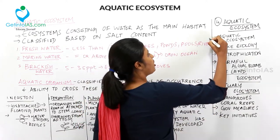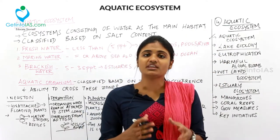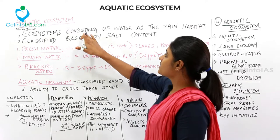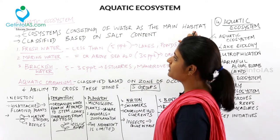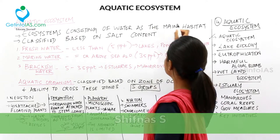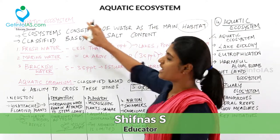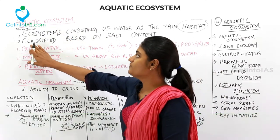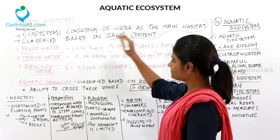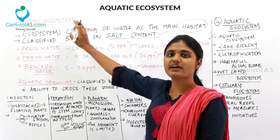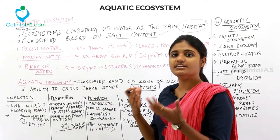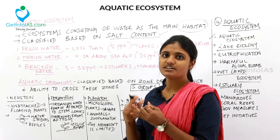So what is an aquatic ecosystem? An ecosystem consisting of water as the main habitat is called an aquatic ecosystem. This aquatic ecosystem is classified on the basis of salt content into freshwater, marine water, and brackish water. In freshwater, the salt content will be less than 5 ppt (parts per thousand), and examples include lakes, ponds, pools, and rivers.